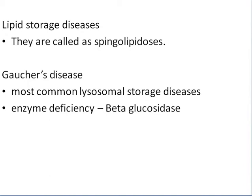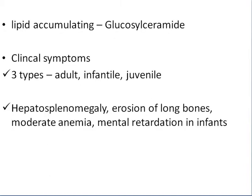Gaucher's disease is the most common lysosomal storage disorder. The enzyme deficiency is beta-glucocerebrosidase, and the lipid accumulating is glucosyl ceramide. Clinical symptoms include types in adults, infantile, and juvenile forms, with hepatosplenomegaly, lung and bone involvement, moderate anemia, and mental retardation in infants.